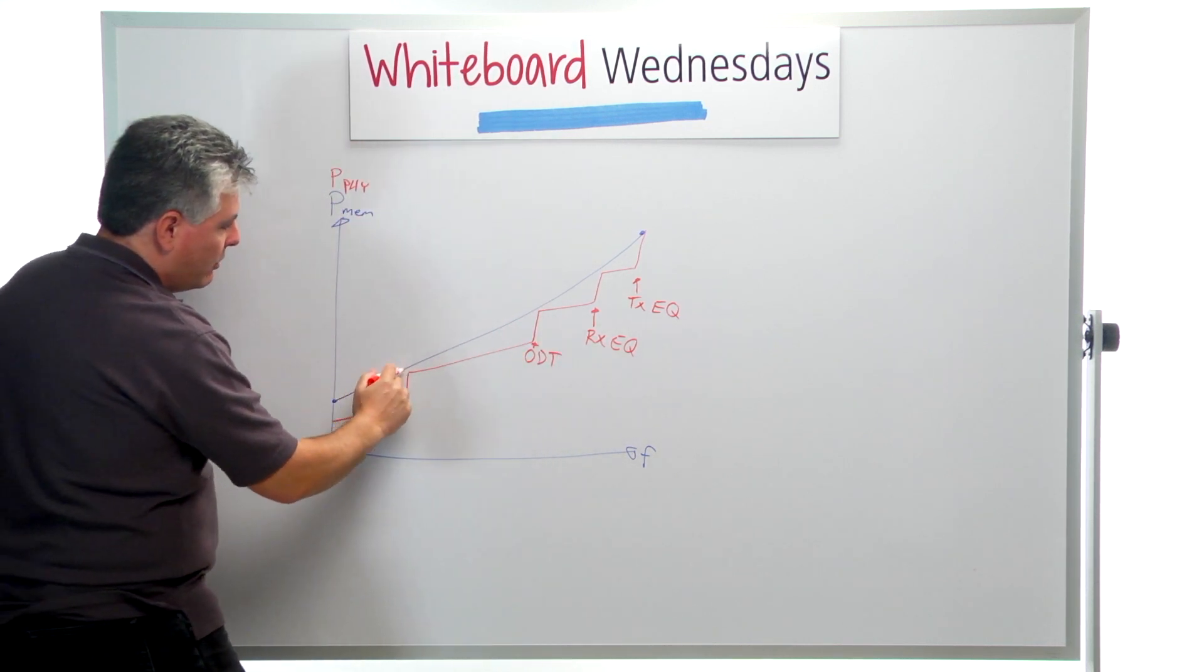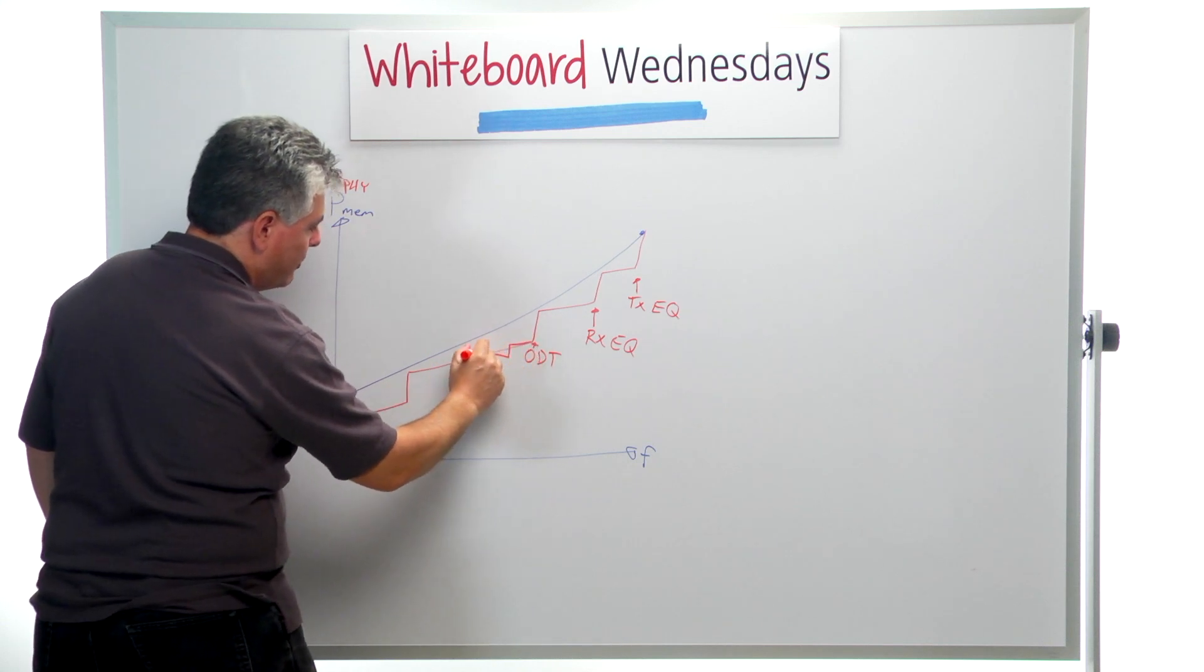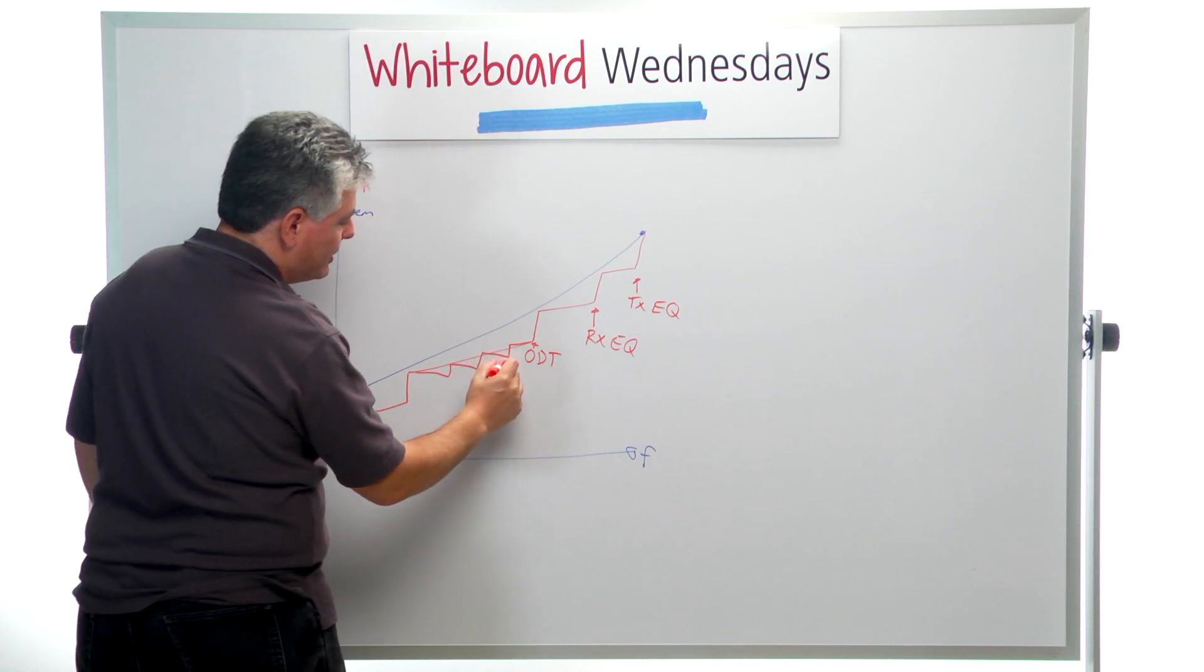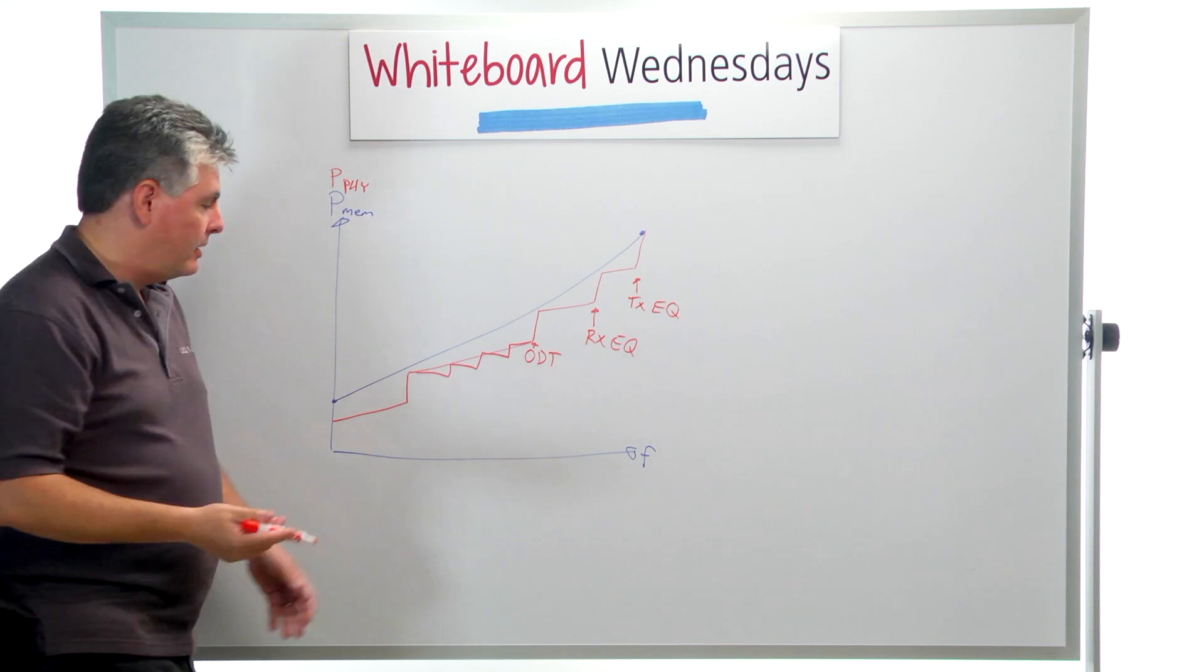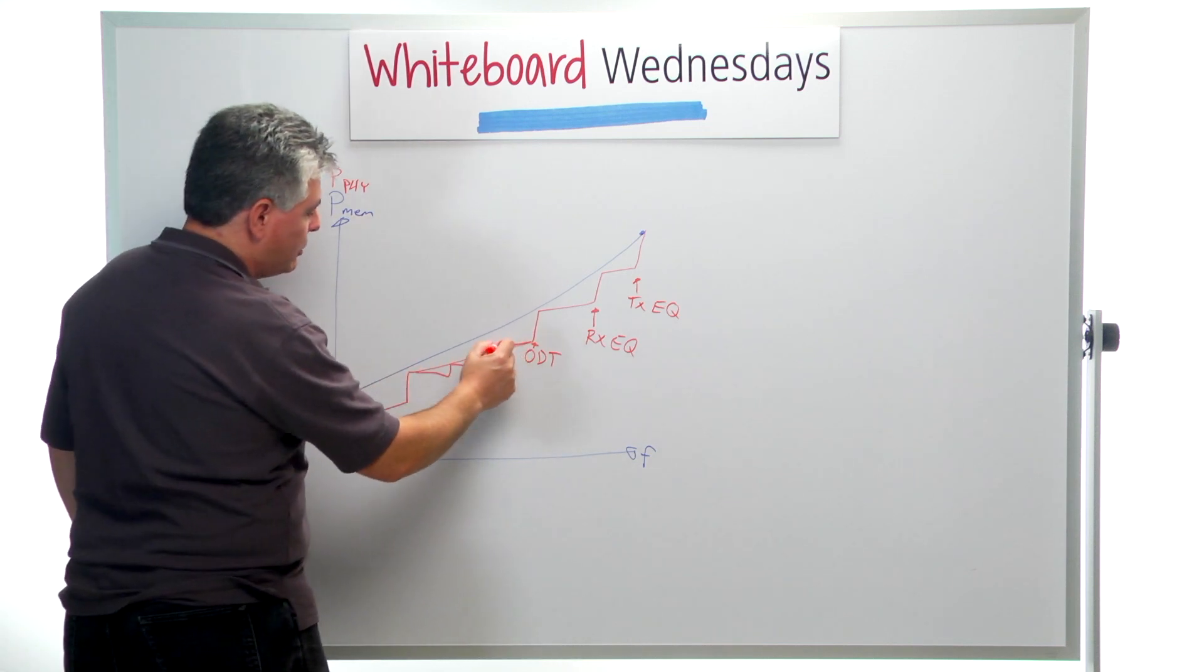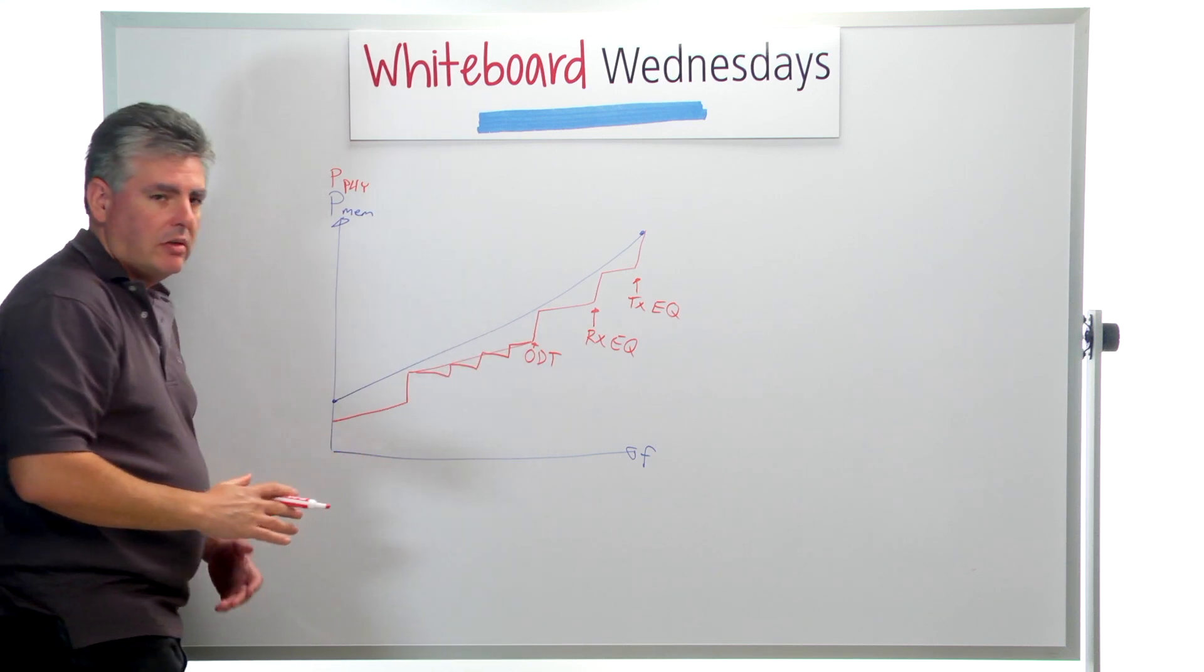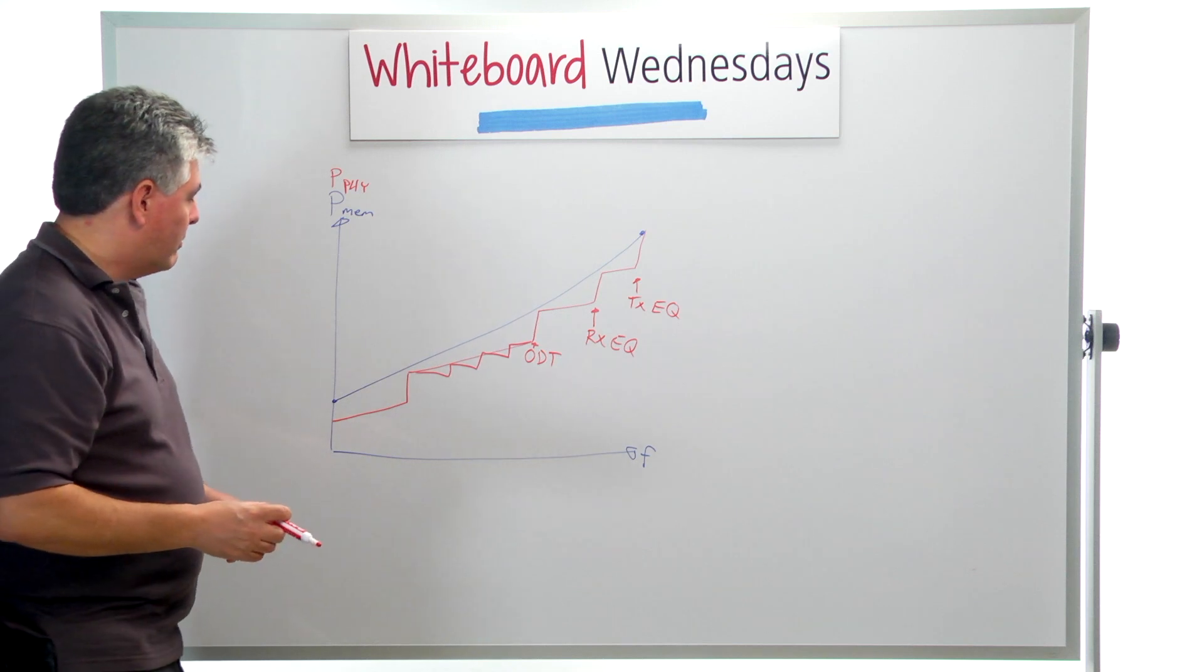And then in this section all the way between here and here, I may be able to actually even have some further steps as I may introduce different settings of on-die termination and also different settings of drive strength, both in the PHY and in the DRAM. So I may choose different points through this frequency range to optimize both the on-die termination setting and the drive strength of the PHY.